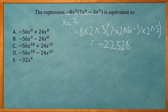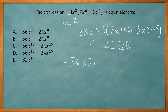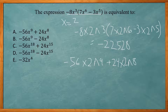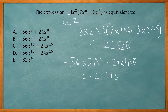Now my goal is to find out which answer choice also gives me the same value. So I'm going to take the first one, do negative 56 times 2 to the ninth power plus 24 times 2 to the eighth power. That's going to give me negative 22,528. So we got it on the first try, so answer choice A is correct.